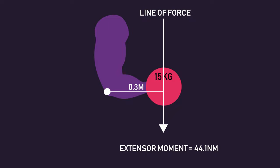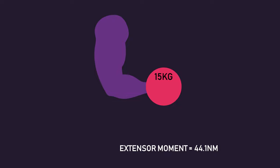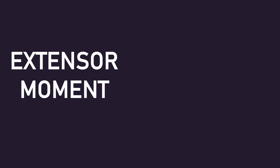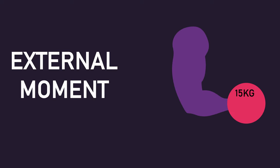To maintain this isometric contraction, your elbow flexors — your biceps brachii, brachialis, and brachioradialis — are going to have to collectively produce a flexor moment equal to 44.1 newton meters. If you wanted to curl the dumbbell upwards, your elbow flexors would have to produce a flexor moment greater than 44.1 newton meters. Therefore, the extensor moment, which in this case was the external moment, as it is the moment primarily applied by the dumbbell which is external to the body, gives us an idea of how hard the muscles around a joint may work.